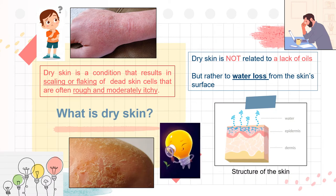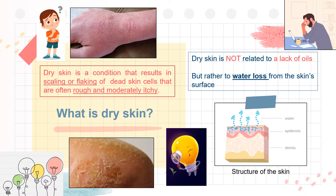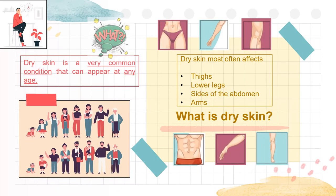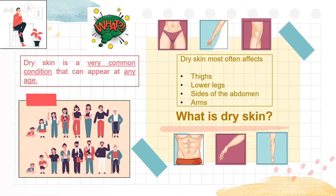What is dry skin? Dry skin is a condition that results in scaling or flaking of dead skin cells that are often rough and moderately itchy. Dry skin is not related to a lack of oils in the skin, but rather to water loss from the skin surface. It often affects thighs, lower legs, sides of abdomen, and arms.